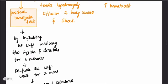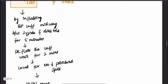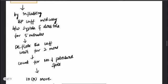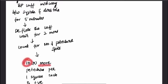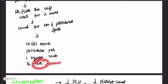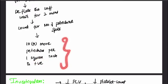The tourniquet test is performed by tying a BP cuff and inflating it to a pressure midway between systolic and diastolic, leaving it for 5 minutes. Then we slowly deflate the cuff and wait for 2 minutes. After 2 minutes, we count the number of petechial spots in the antecubital fossa. If there are 10 or more spots per 1 square inch, this is a positive tourniquet test.